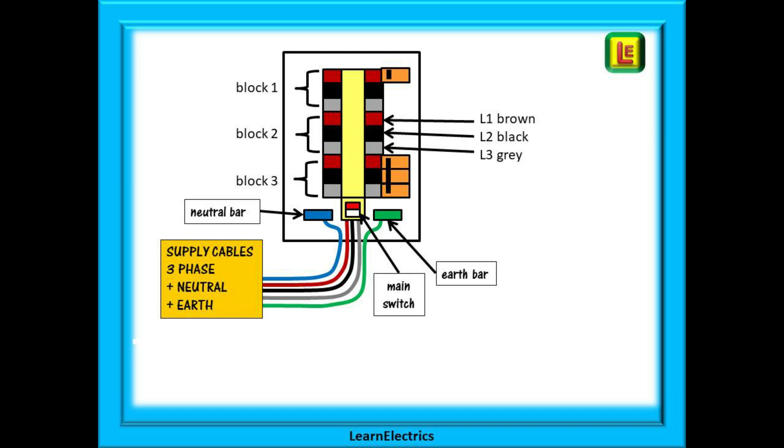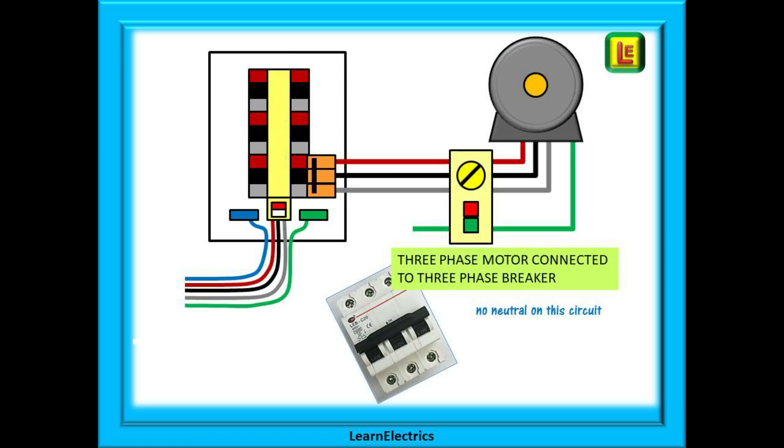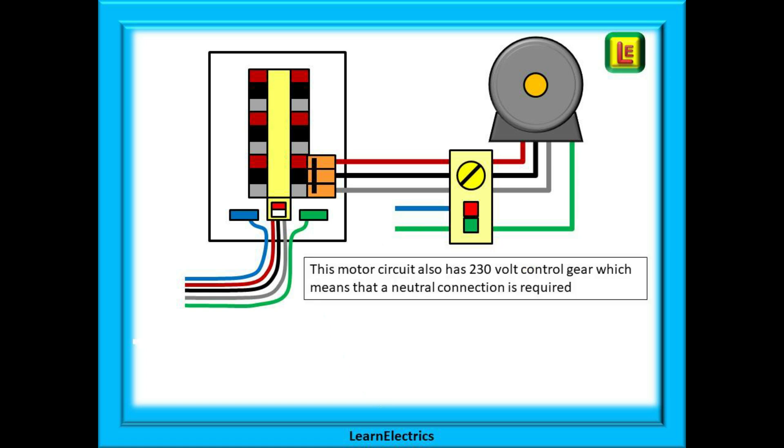We can populate this board with either single-phase circuit breakers or three-phase circuit breakers, as shown on the right-hand side of the board. Our first task is to connect a three-phase motor to the board. This is by means of a three-phase linked circuit breaker. If one phase has an overload or overcurrent and disconnects, then all three phases of that circuit will disconnect at the same time. This motor circuit does not require a neutral connection, so none is supplied. Some three-phase circuits will have 230 volt control gear, and this means that a neutral connection is also required.